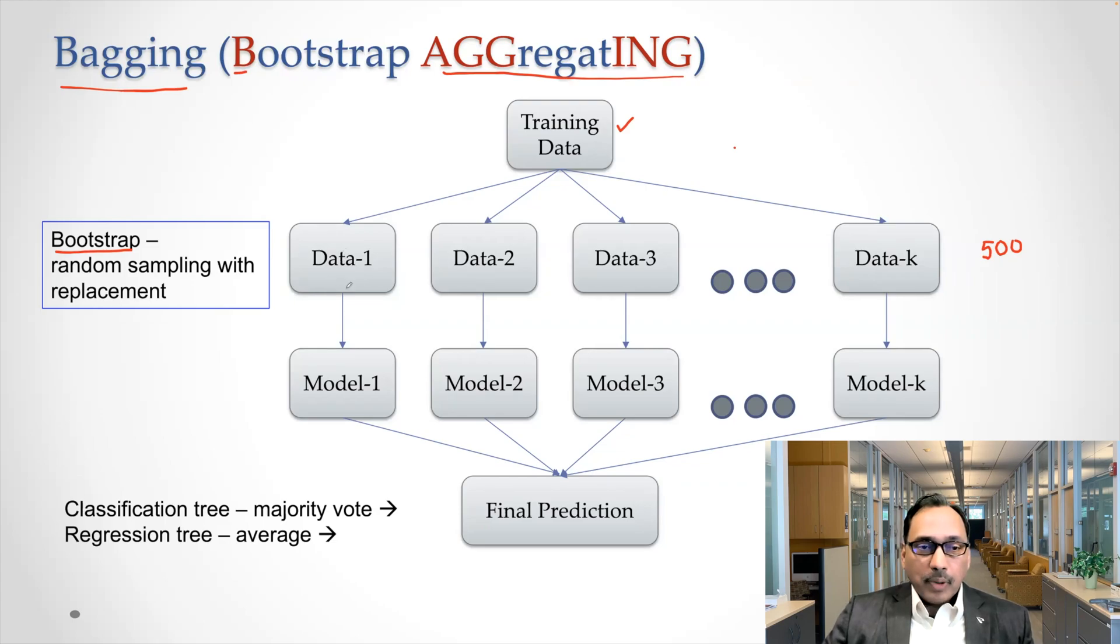Now what happens is from data one, you create your tree model and we can call that model one. From second data, we can create another tree, which could be slightly different. Similarly, third tree model and so on, maybe 500 trees.